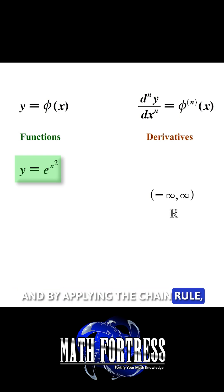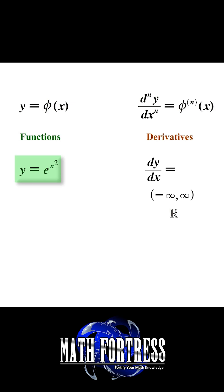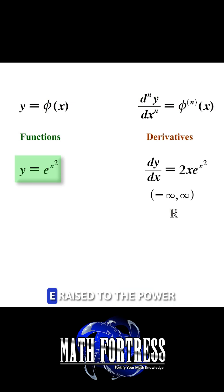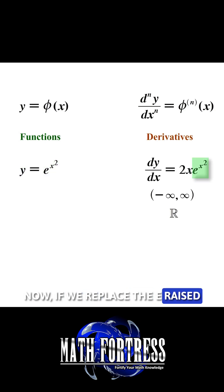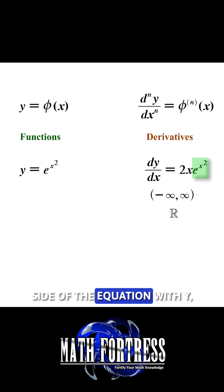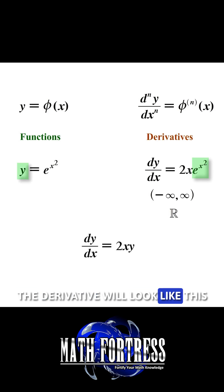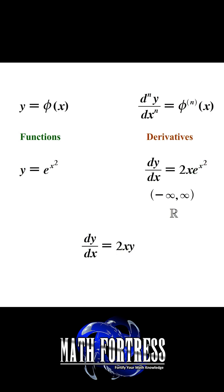By applying the chain rule, we find that its derivative is equal to 2 times x times e raised to the power of x squared. Now if we replace the e raised to the power of x squared term on the right hand side of the equation with y, the derivative would look like this: 2 times xy.